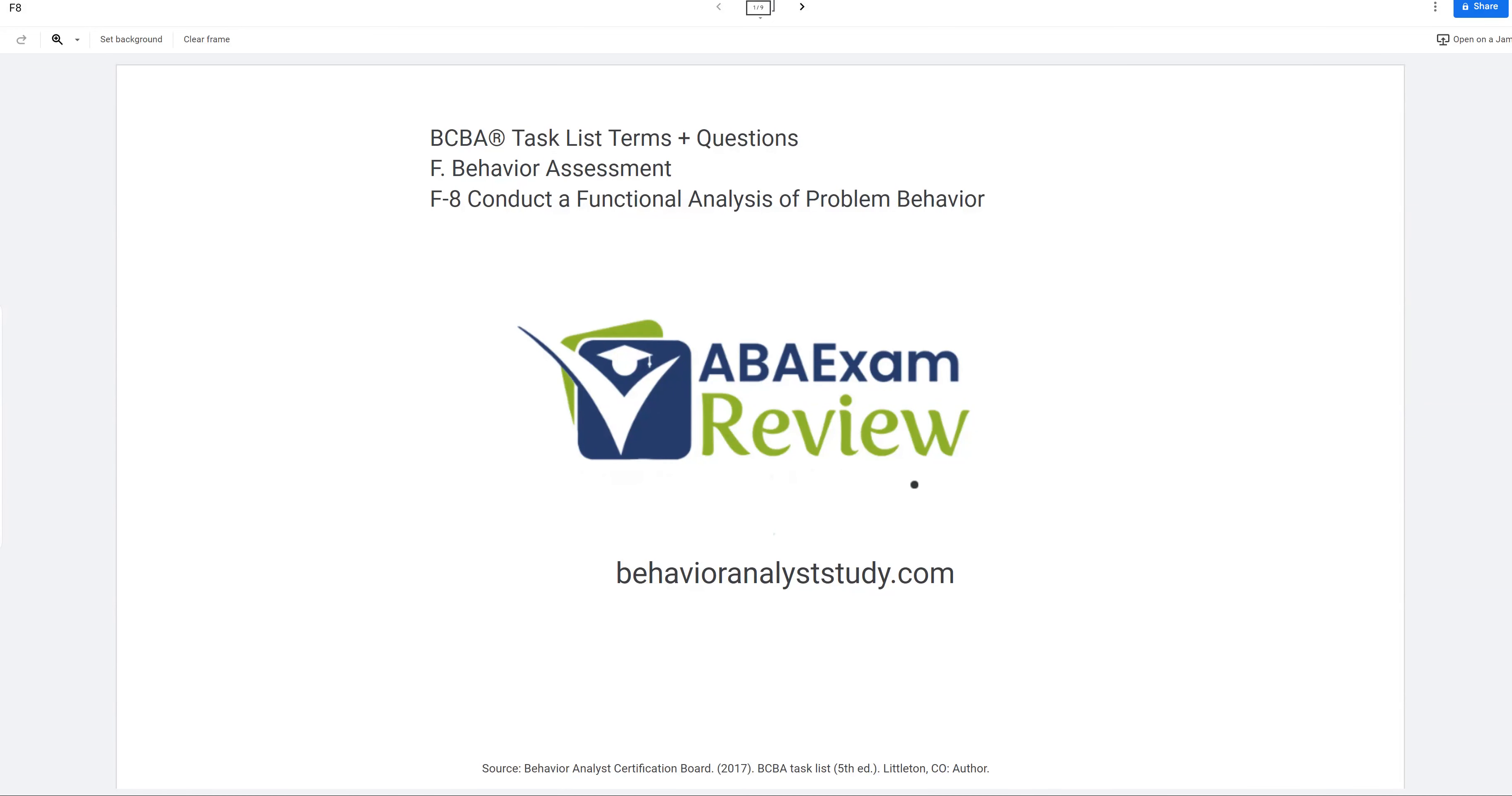All right, welcome back to ABA Exam Review and the continuation of our BCBA 5th edition task list series with F8, Functional Analyses of Problem Behavior. Functional analyses are the highest level of assessment we can do because the functional analysis is the best way to truly determine the function of a behavior. Aside from our indirect and direct assessments, which help us hypothesize the function, the functional analysis is really the one true assessment where we can actually reach our goal of identifying a function. So we're going to make it really simple today. This is not that complex of a topic, but it can be intimidating.